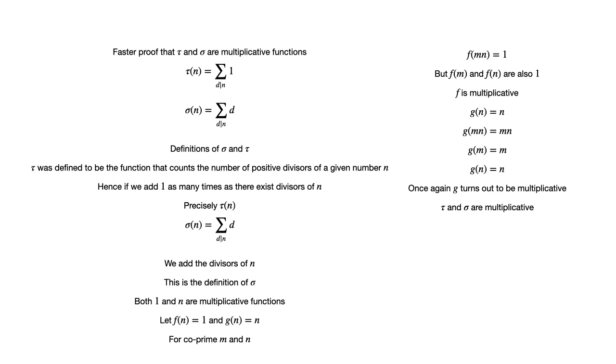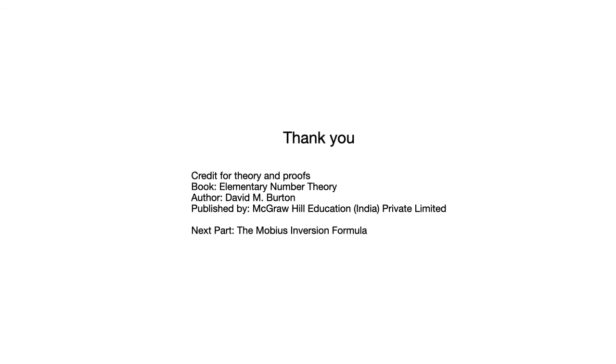we can readily make the claim that tau and sigma are multiplicative just by falling back on the theorem we just proved. Tau and sigma are defined as the sums of f and g respectively over the divisors of n and what's more is that f and g are multiplicative by which it follows that so are tau and sigma. Now that we have completed our introduction to multiplicative functions, we are ready to begin talking about the Möbius function eventually leading to the Möbius inversion formula. This is the subject of the next part.